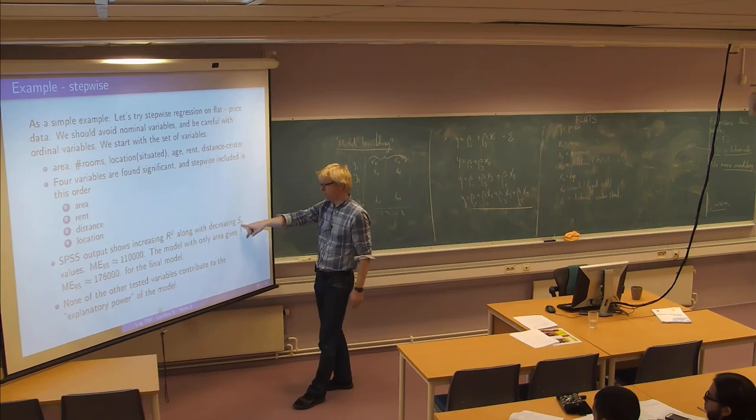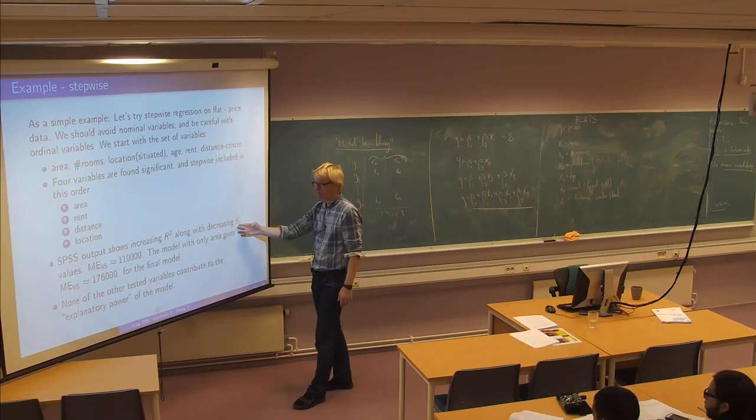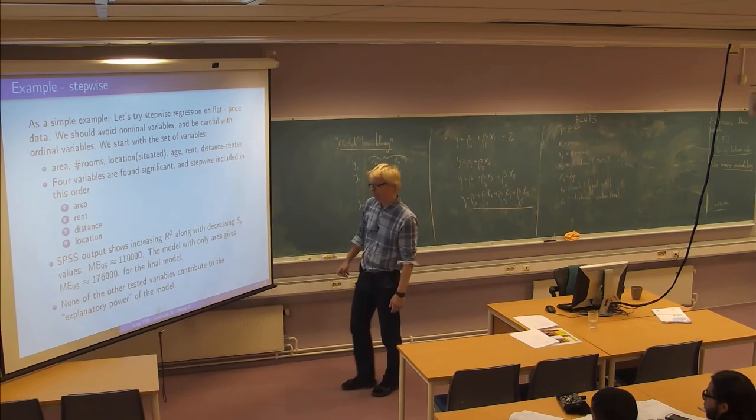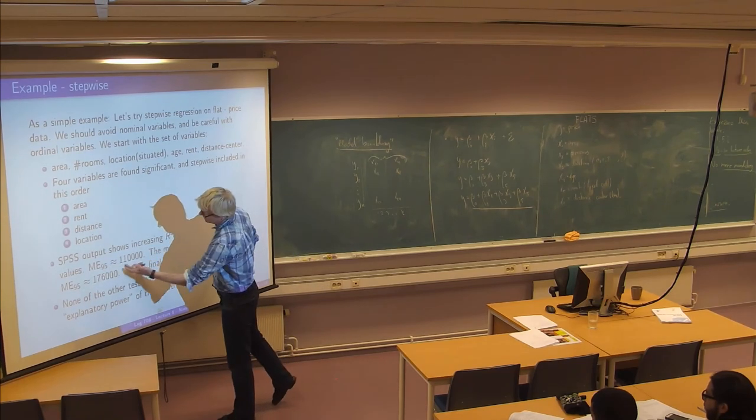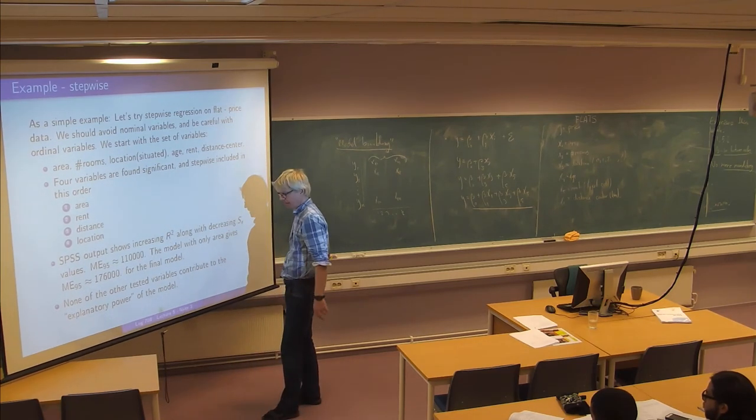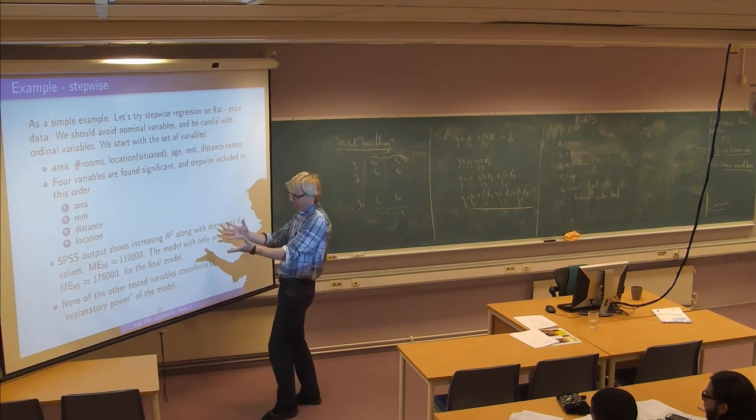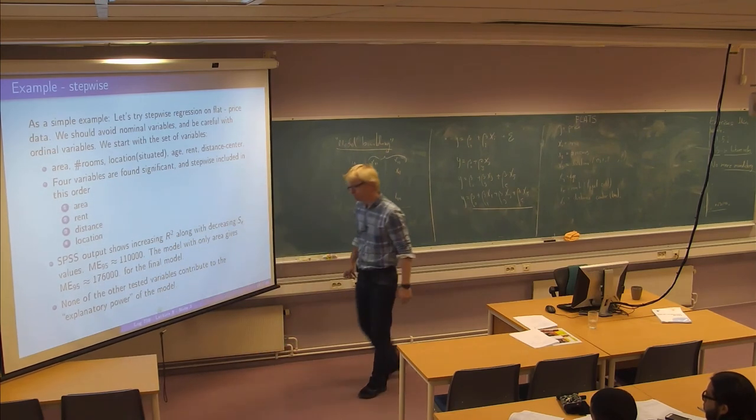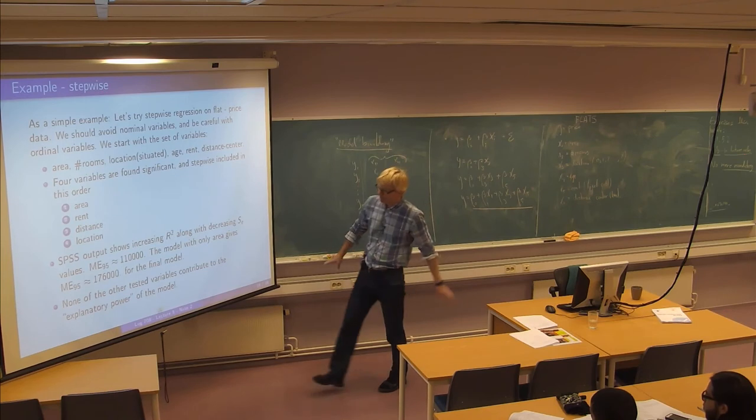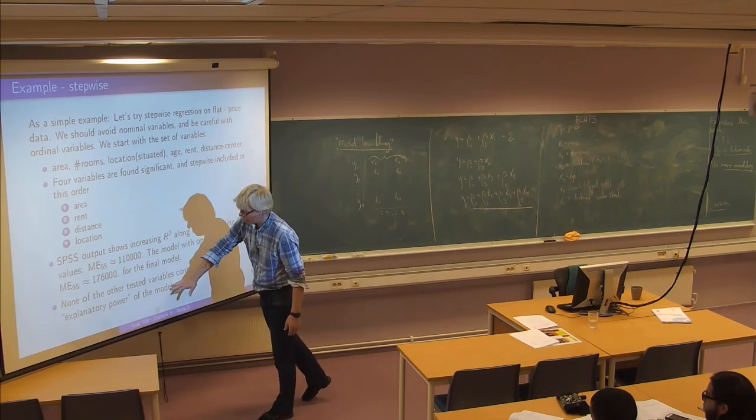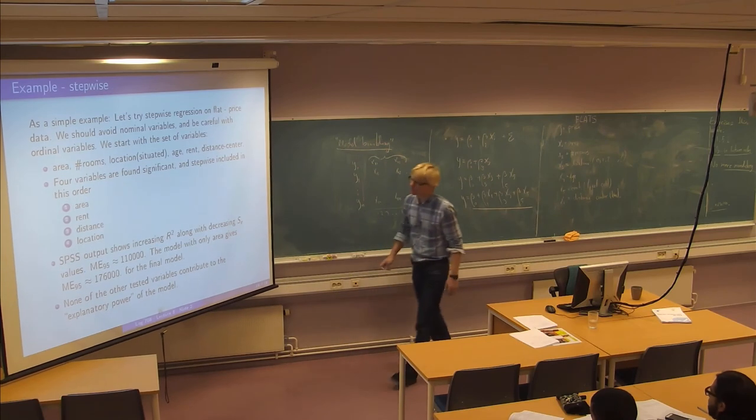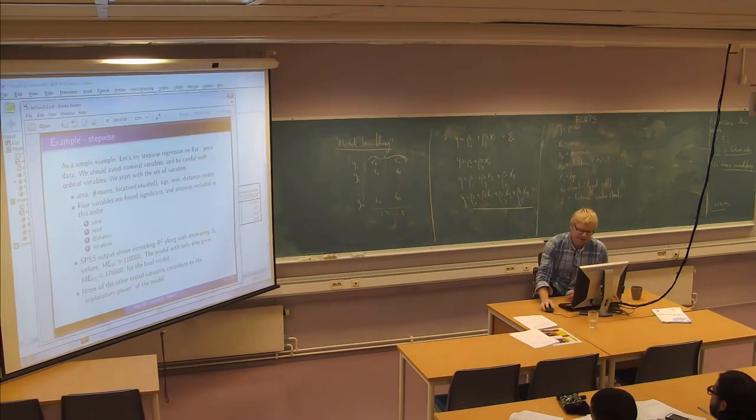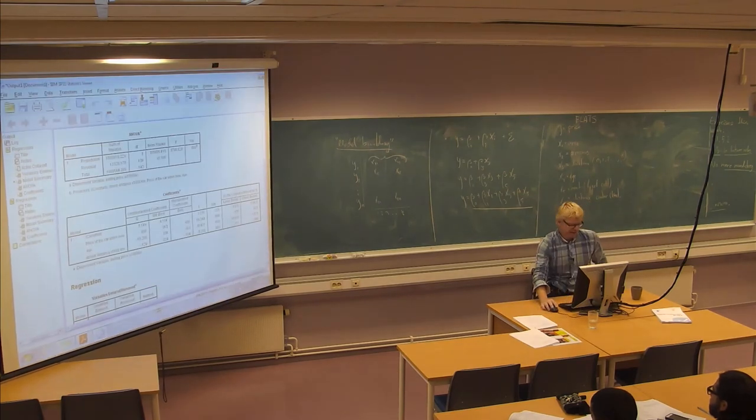And then you can track the process so you see how the R square increases. And at the same time the error margin given by this one decreases. And we will end up with a margin of error at 95% at about 110,000. And this will be better, of course, than using only the area because then the margin of error would be 176,000. And SPSS will give us a list of the other variables and show that it does not contribute to the explanatory power. So let's see in living action.